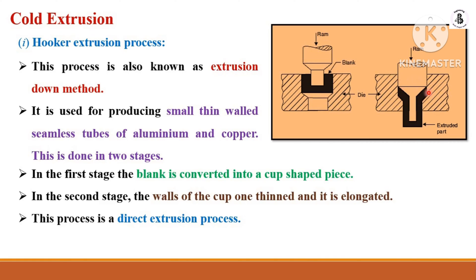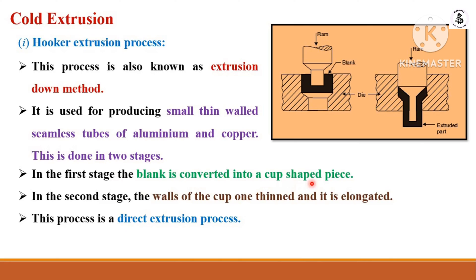By the application of downward movement of the ram with high pressure, this blank undergoes plastic deformation and converts into the desired shape. In the cold extrusion process there is no heating involved — just applying force to the ram and using the die to achieve permanent plastic flow of the material. It is used for producing small thin-walled seamless tubes of aluminium and copper. This is done in two stages: first, the blank is converted into a cup shape; second, the wall of the cup is thinned and elongated. This is a direct extrusion process.